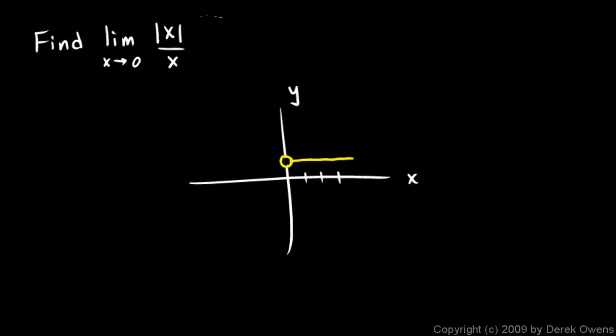For any number less than 0, any x value less than 0, this function will evaluate to negative 1. So it looks like this, and open circle right there.